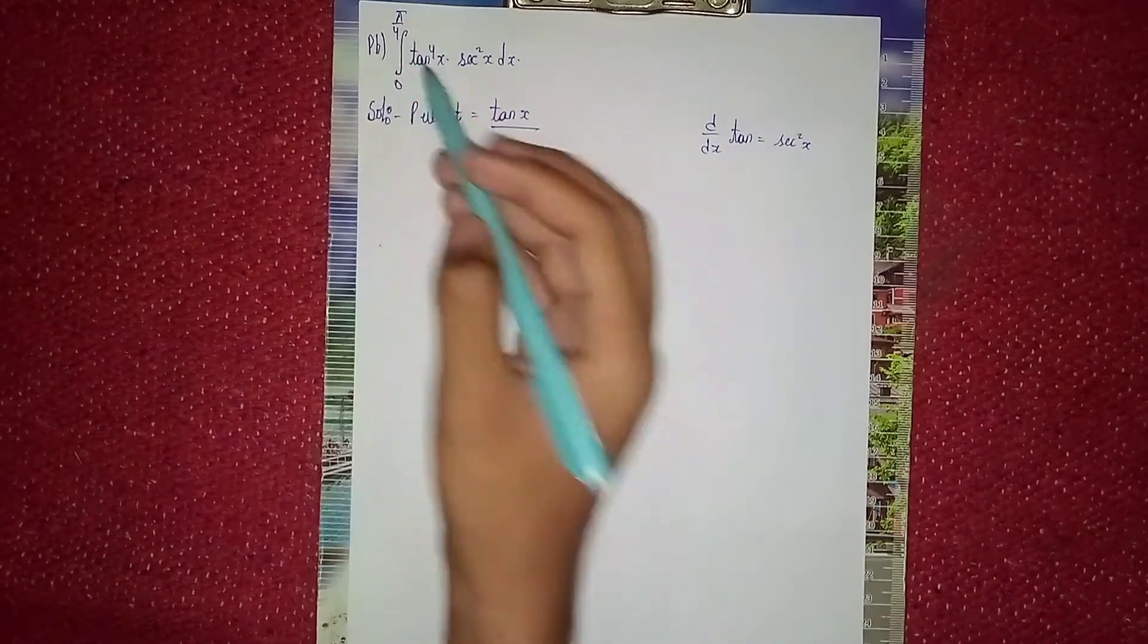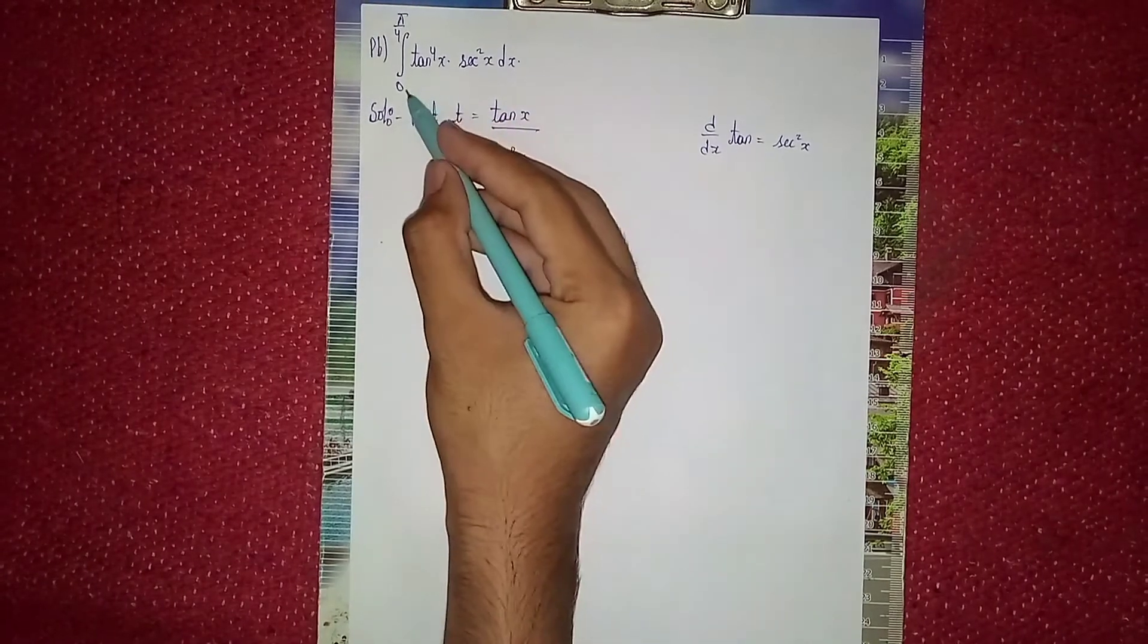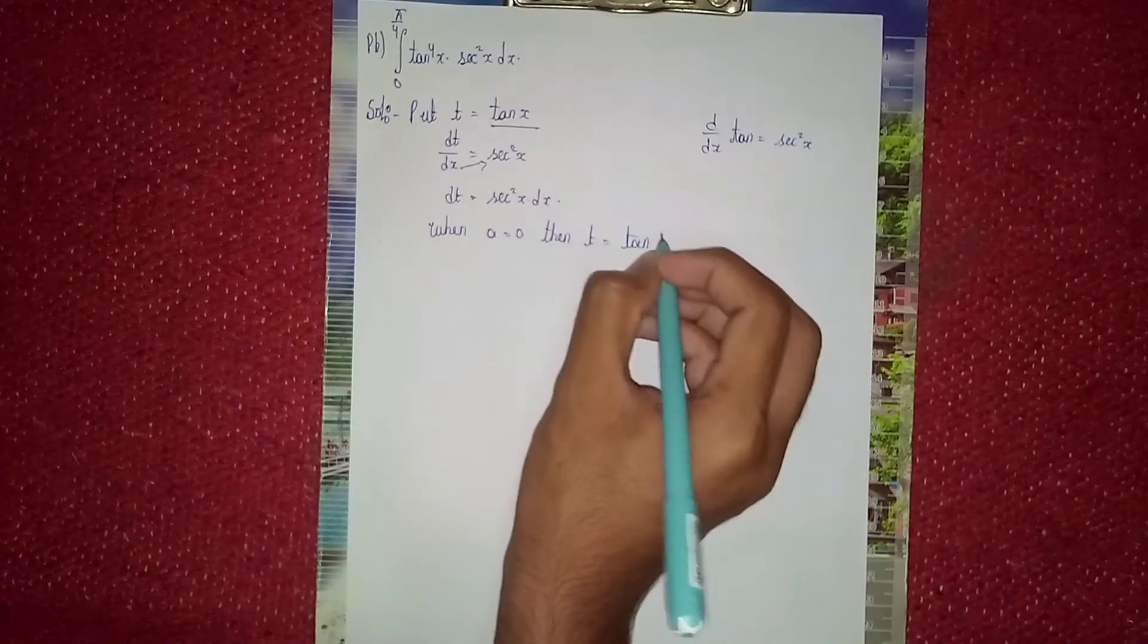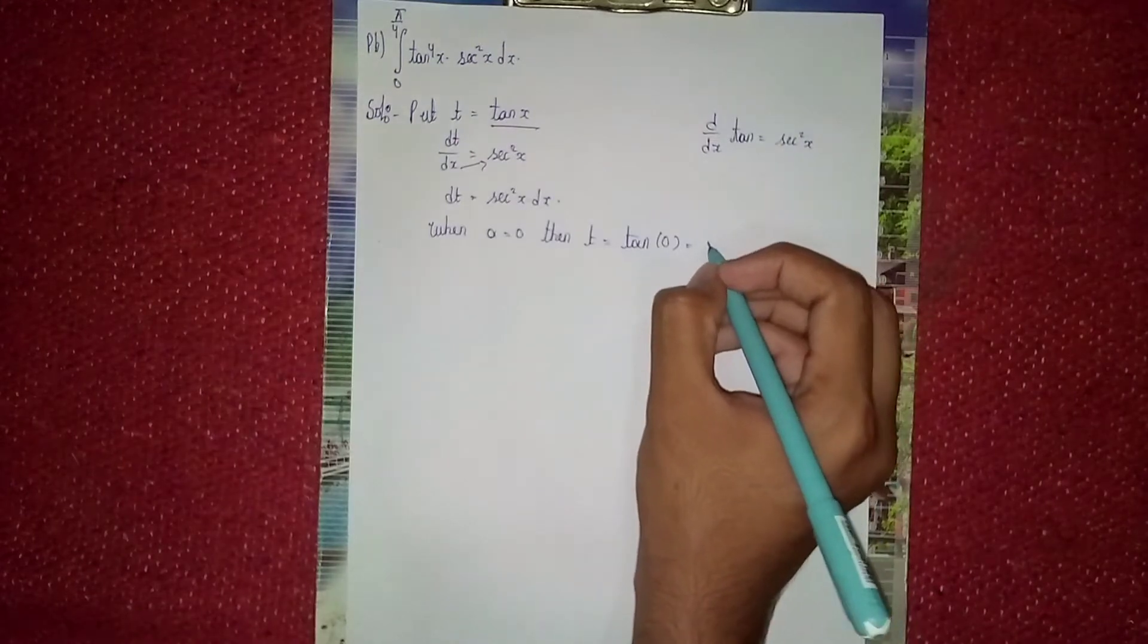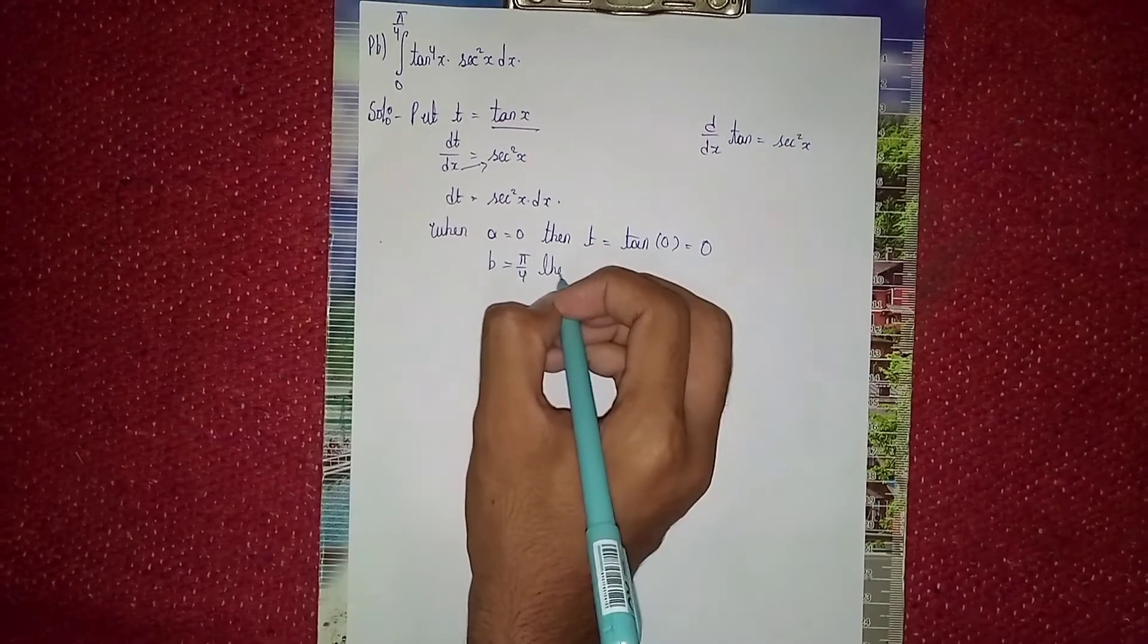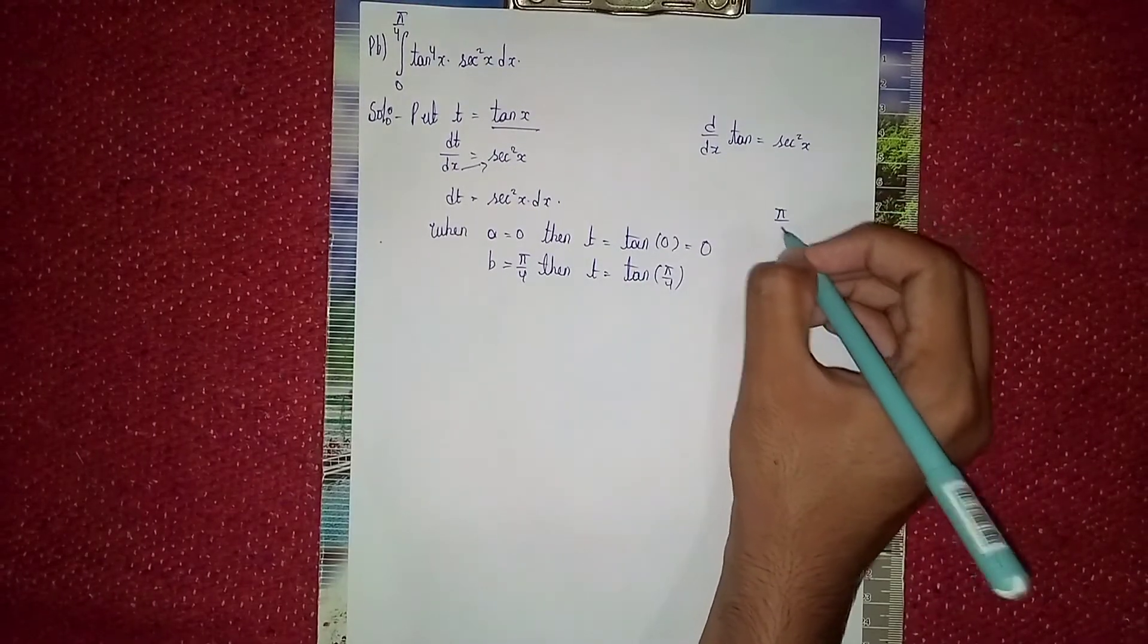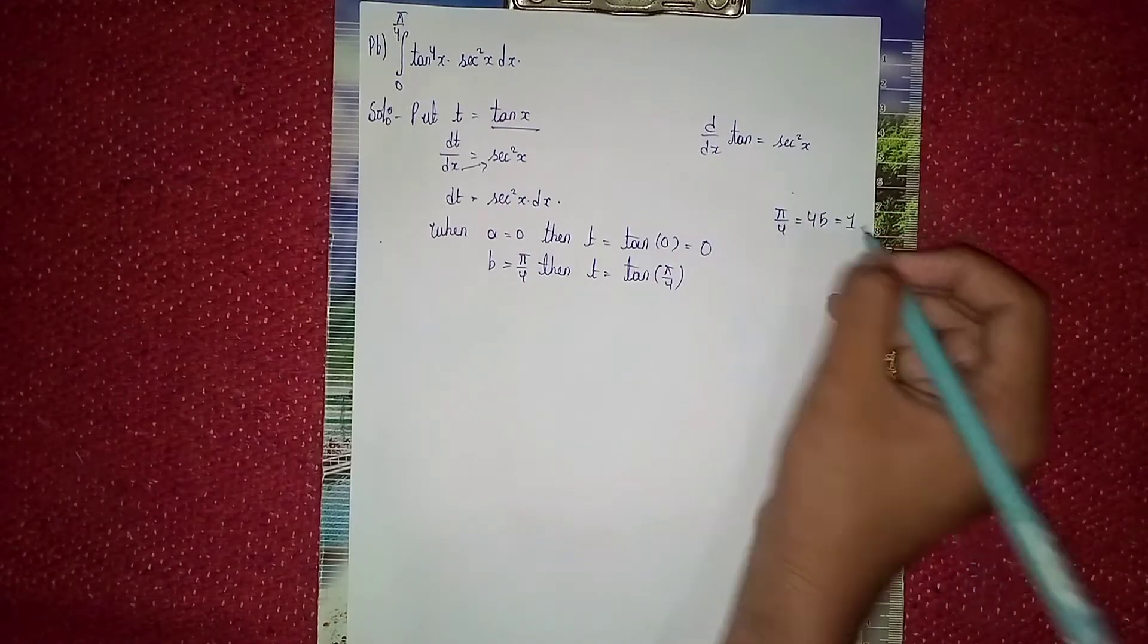When we do substitution method, the limits also change. When x equals 0, the lower limit, then t equals tan(0), which is 0. When x equals π/4, then t equals tan(π/4). Tan(π/4) means tan(45°), which is 1.